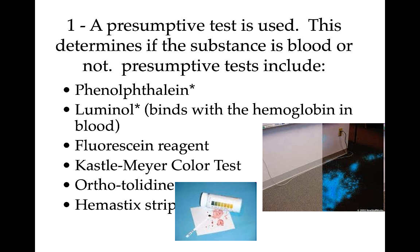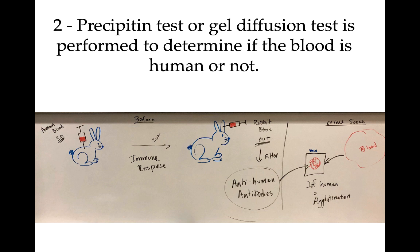Now that we understand how the immune system works and what an antibody is, let me explain how we determine if blood found at a crime scene belongs to a human. The test is called a precipitant test or gel diffusion test — the only difference is whether you have a large or small sample. With a large sample it's a precipitant test done in a test tube; with a small sample it's a gel diffusion test done on a gel plate. It's the same test done the same way.